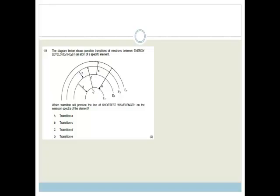The diagram below shows possible transitions of elements between energy levels E1 to E4 in an atom of a specific element. A and B and E are dropping from E4 to E1. And C and D are increasing. So C and D, what's actually happening is that they're absorbing energy to go from the inner energy level to the outer. And A, B, and E, they're giving off. Which transition will produce the line with the shortest wavelength of emission spectra? Since we're looking at emission spectra, we're getting light given off. So we're either looking at A, B, or E. So we're either looking at A or E, because C and D are not included.